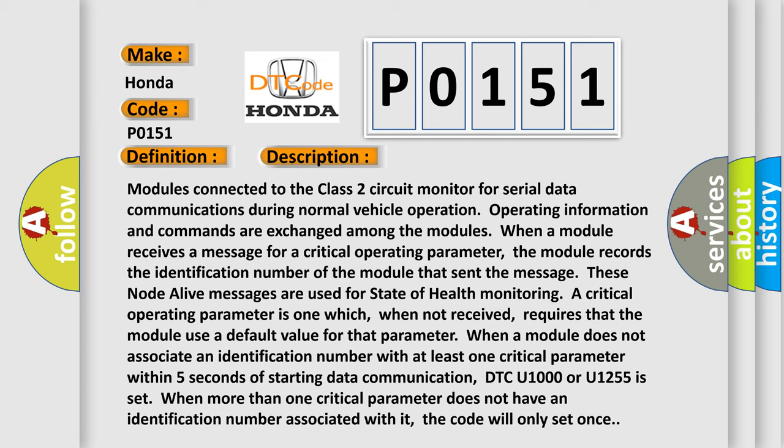These node alive messages are used for state of health monitoring. A critical operating parameter is one which, when not received, requires that the module use a default value for that parameter.